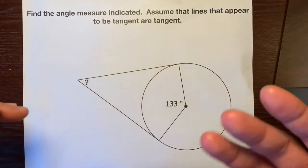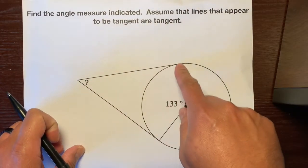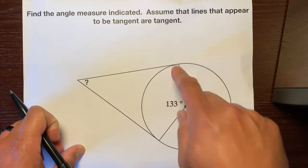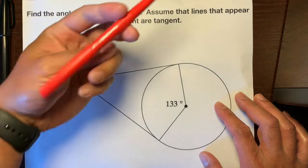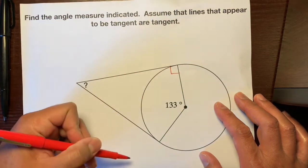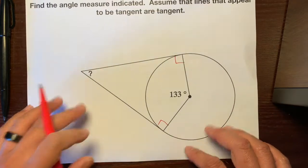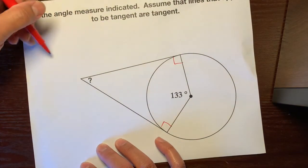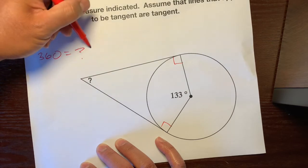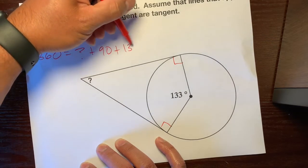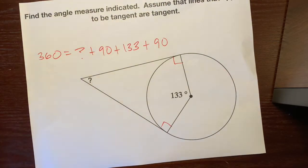So here's the indicated angle. Assume that lines that appear to be tangent are tangent. So if you remember, just from 10 seconds ago, tangent lines and their radius that intersect on the circle are perpendicular. So I'm going to put a right angle symbol there and another right angle symbol there. And we're just going to set all four of these angles equal to 360.